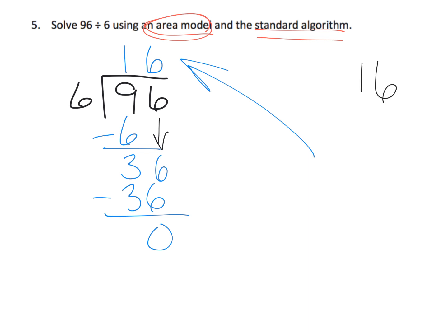And if we wanted to check, it doesn't say we should, but let's check it anyway. 16 times 6. Let's see. 6 times 6 is 36. So that's 6. We'll carry the 3 tens. 6 times 1 is 6 plus 3 more tens. That gives us 9. So we get 96, which is exactly what we started with. So that tells us that 16 is probably correct.